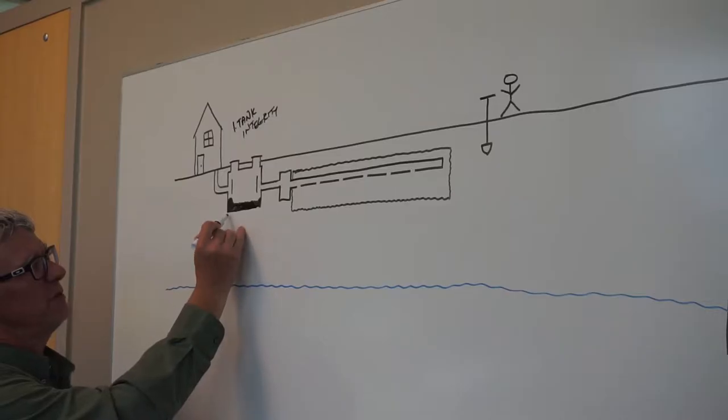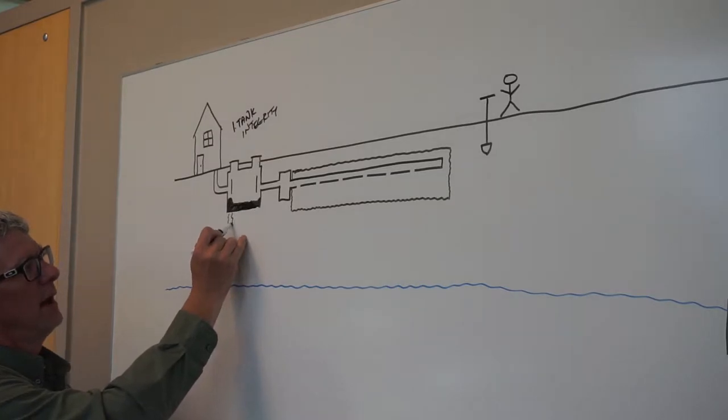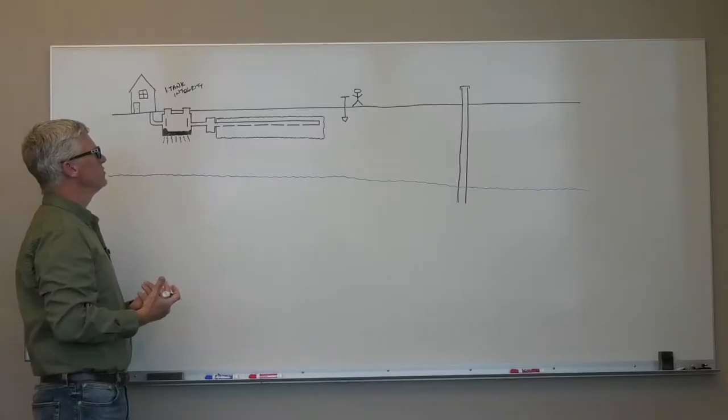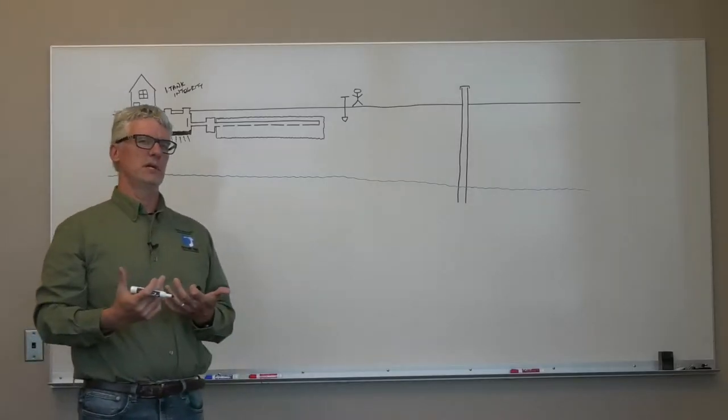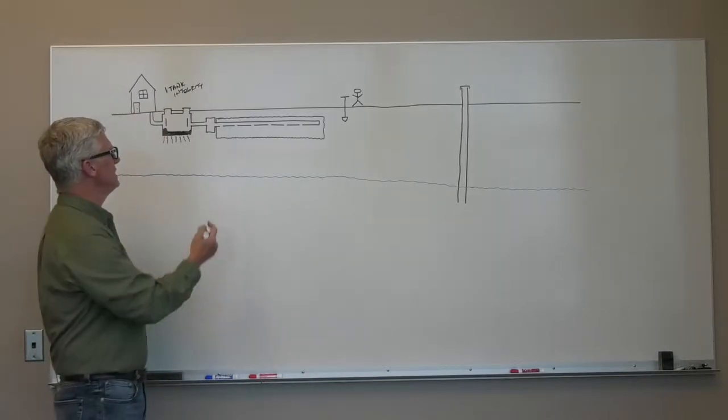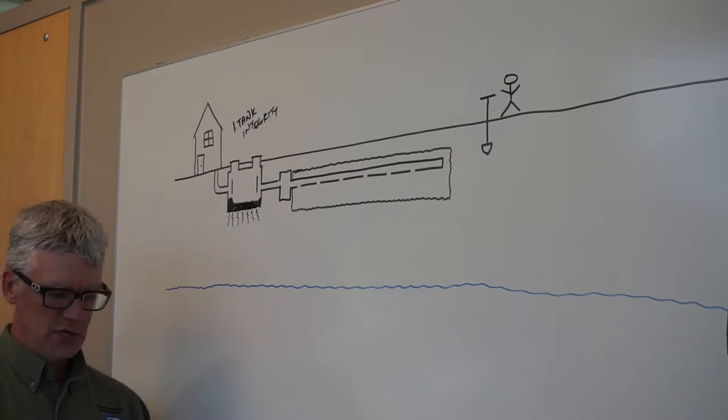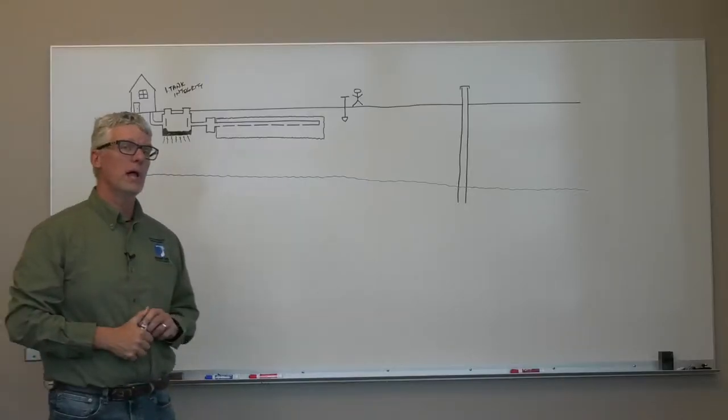Because the septic tank effluent is going to leave the tank and again create this area underneath the tank that is heavily saturated. And when you have saturated soil, you're not getting any treatment. Therefore, the effluent that's leaving the tank isn't treated before it hits the groundwater. So that's item number one on a compliance inspection.